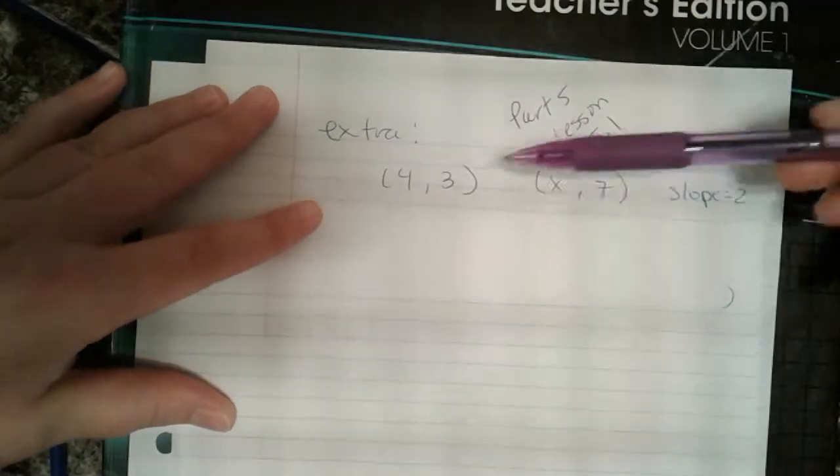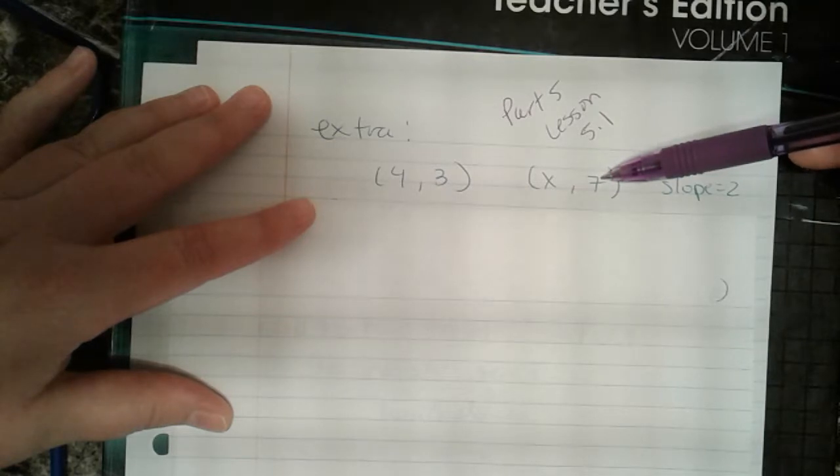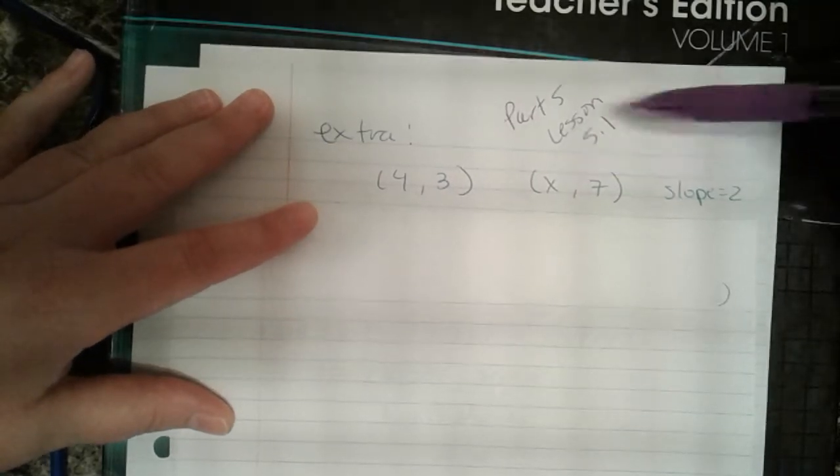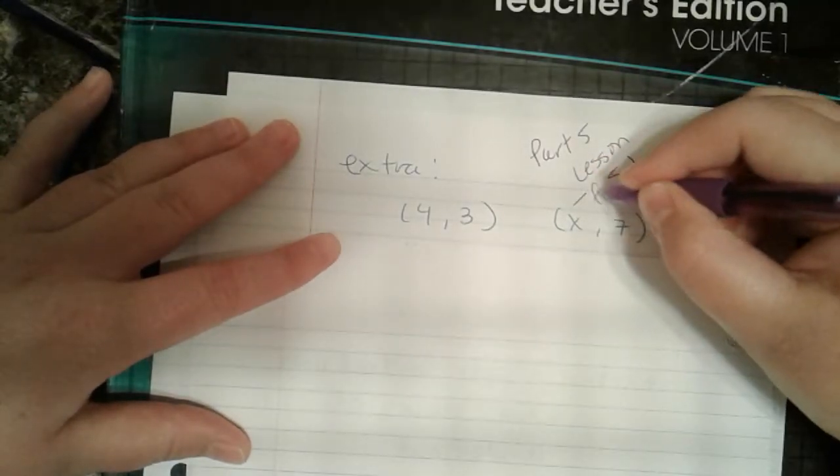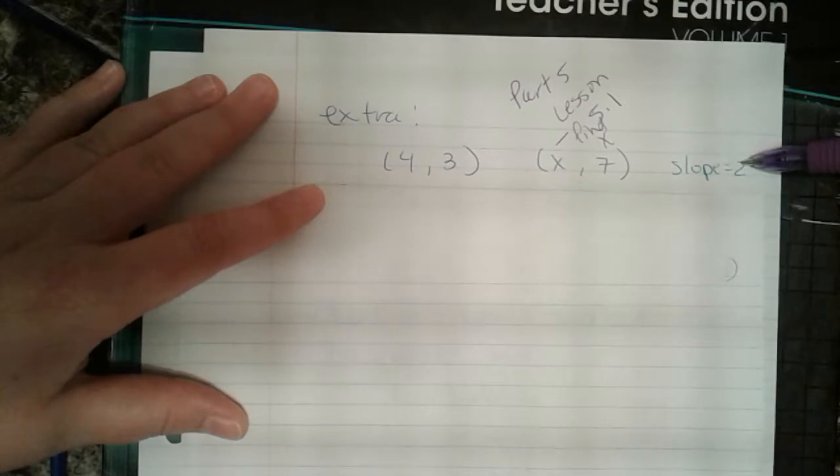So I have the points (4, 3) and (x, 7). That's an ordered pair, x and 7. I don't know what x is. So that's my goal. I have got to find x. And I know that my slope is 2.